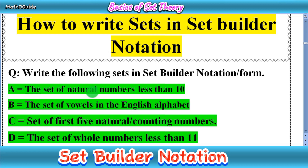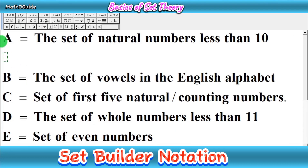We have a question: write the following sets in set builder notation or set builder form. We have some simple examples. The first set is set A, which is equal to the set of natural numbers less than 10. First, write the set name, then a curly bracket, then a variable. You can write Y, but normally we write X because we prefer X in algebra.